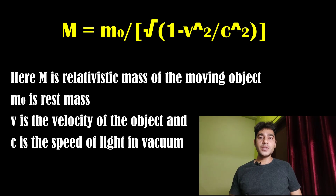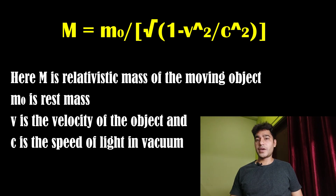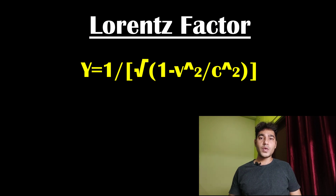Let's now understand it mathematically and see how changes in mass, time, and length are observed at relativistic speeds. The formula for relativistic mass is: m = m₀ / √(1 − v²/c²), where m is the relativistic mass, m₀ is the rest mass, v is the velocity of the object, and c is the speed of light in vacuum. The factor 1 / √(1 − v²/c²) is called the Lorentz factor, gamma.